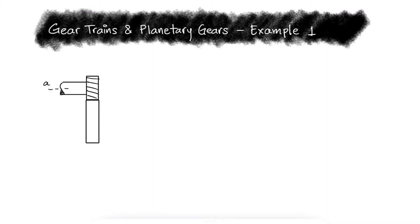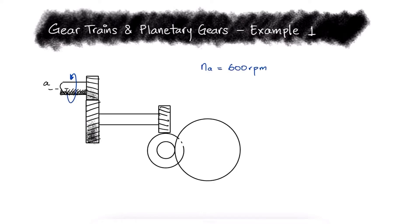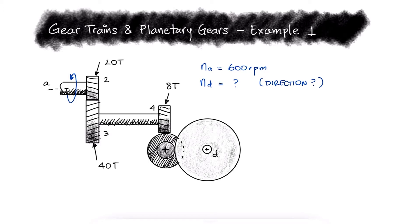Shaft A is rotating at 600 revolutions per minute in the direction shown. What is the speed and direction of rotation of shaft D, and what are the input and output torques if shaft A is fed with 1000 watts and the system has 100% efficiency?